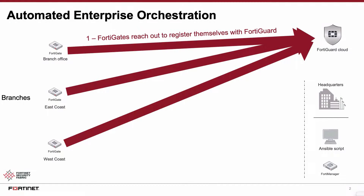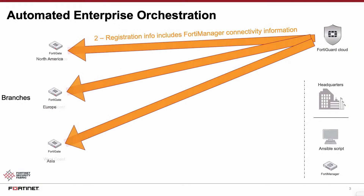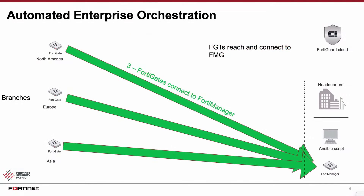As soon as that's done, the process is automated. The FortiGates reach out to the FortiGuard cloud to register themselves. The FortiGuard cloud sends the registration information of the FortiManager to the respective gates, and the gates are now equipped with everything required to connect to the manager. They will reach out and connect to the manager located in the organization's headquarters.